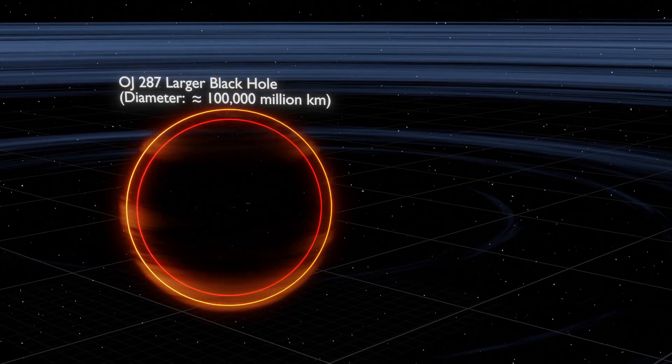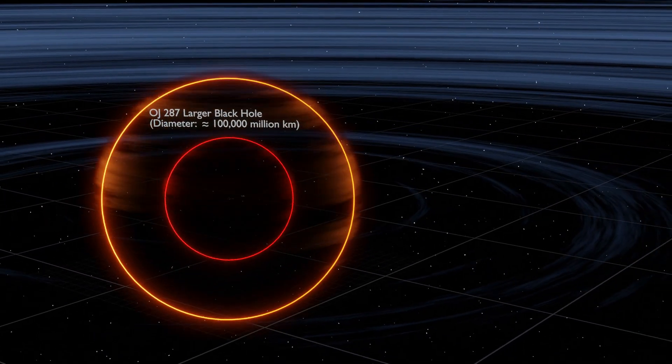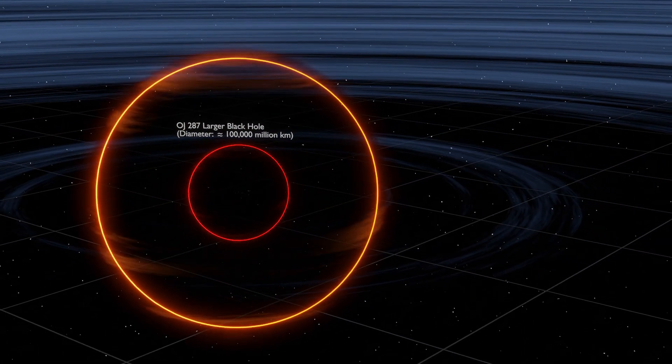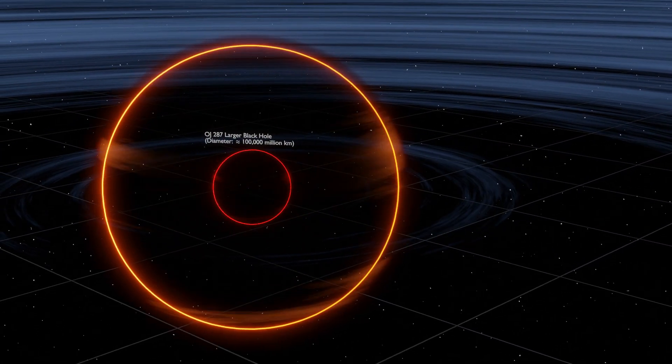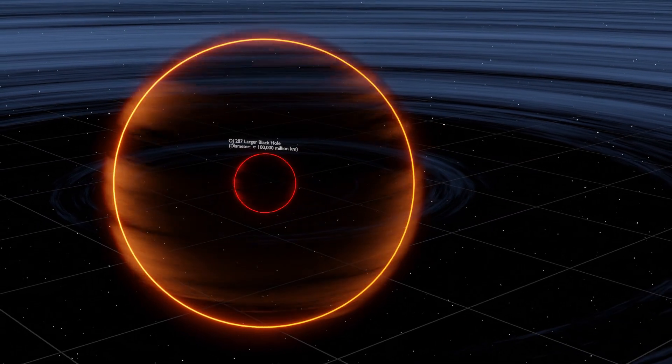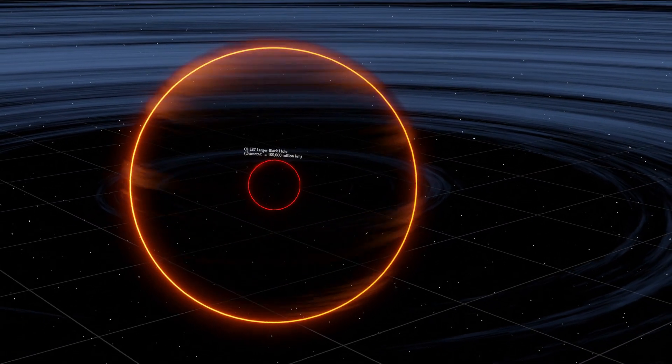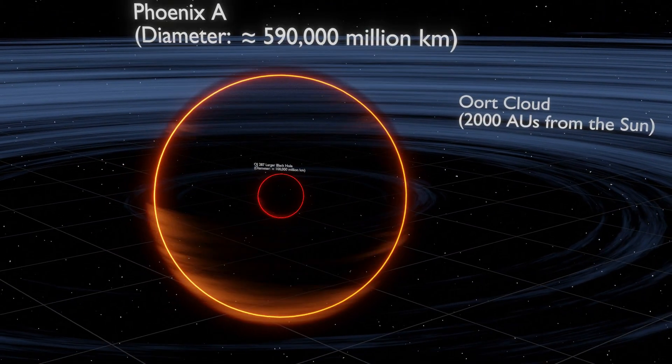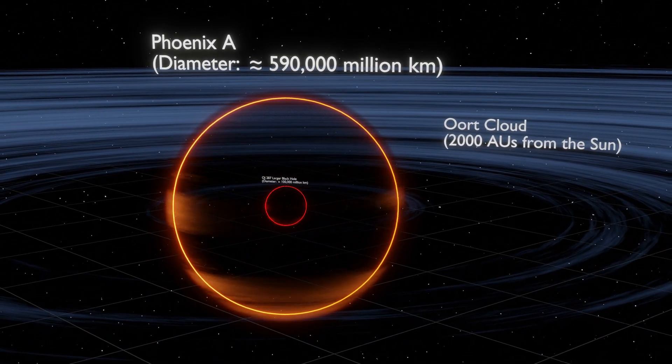Phoenix A is currently the largest known black hole in the universe. It is even larger than the Ton 618. The diameter of Phoenix A would extend out as far as the Oort cloud, approximately 2,000 astronomical units from the Sun.